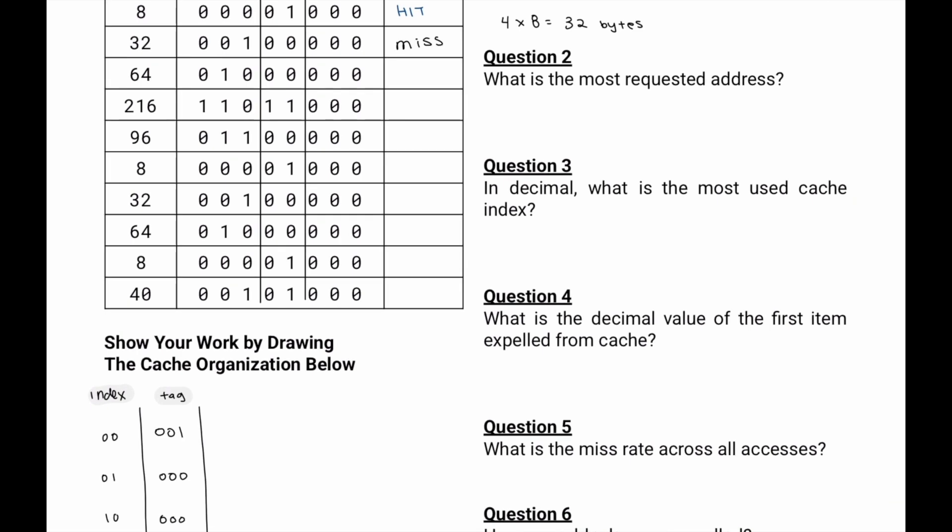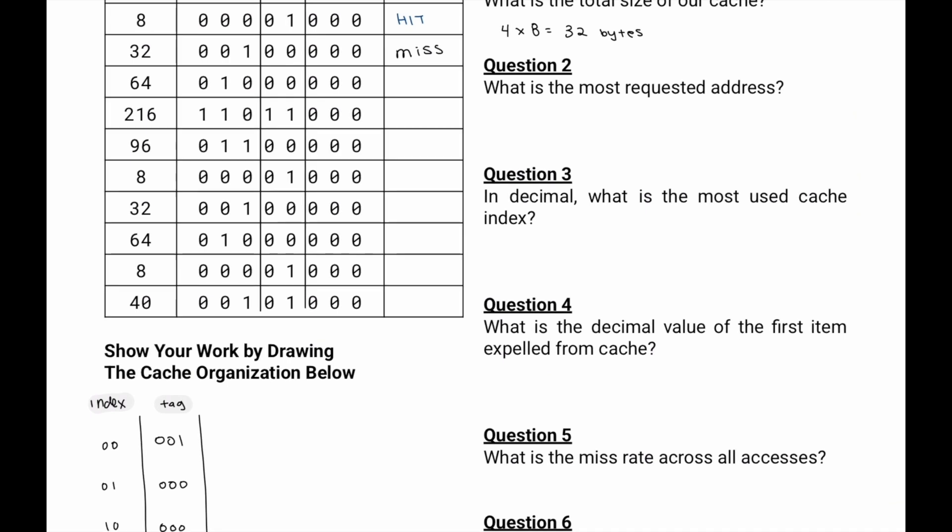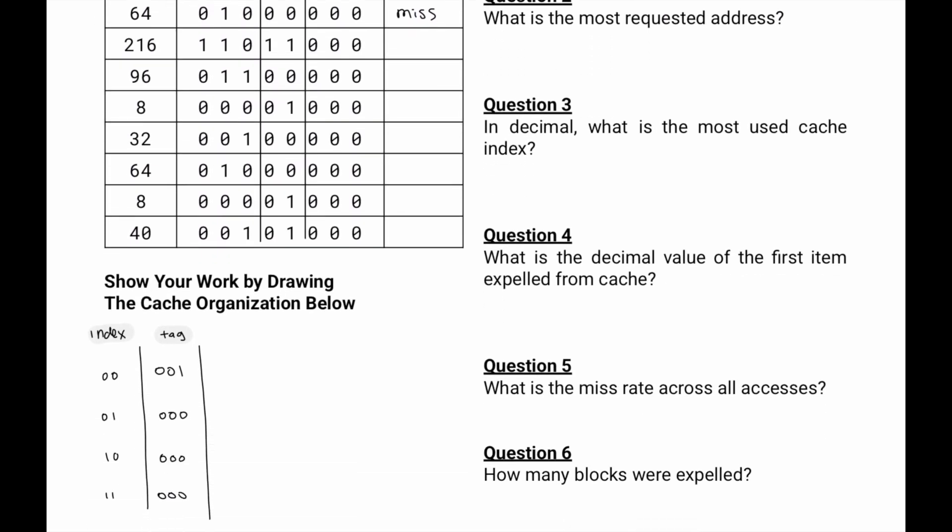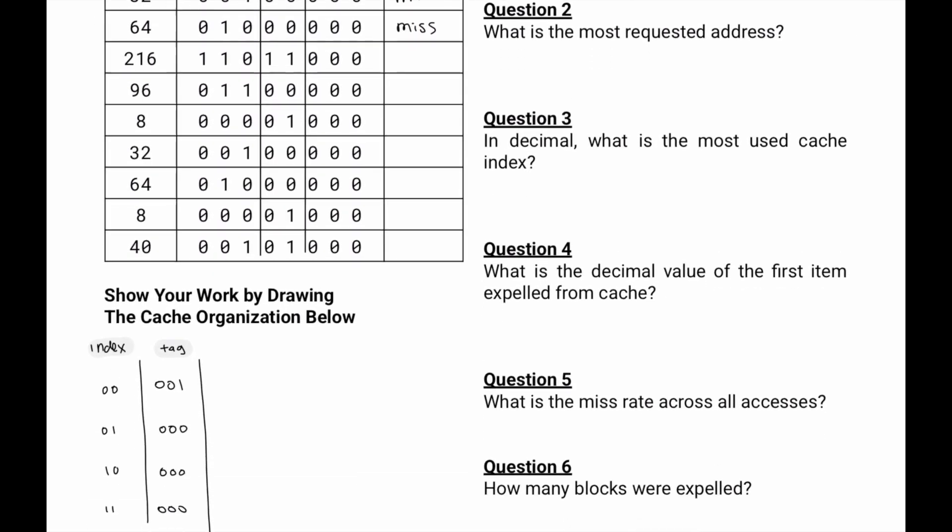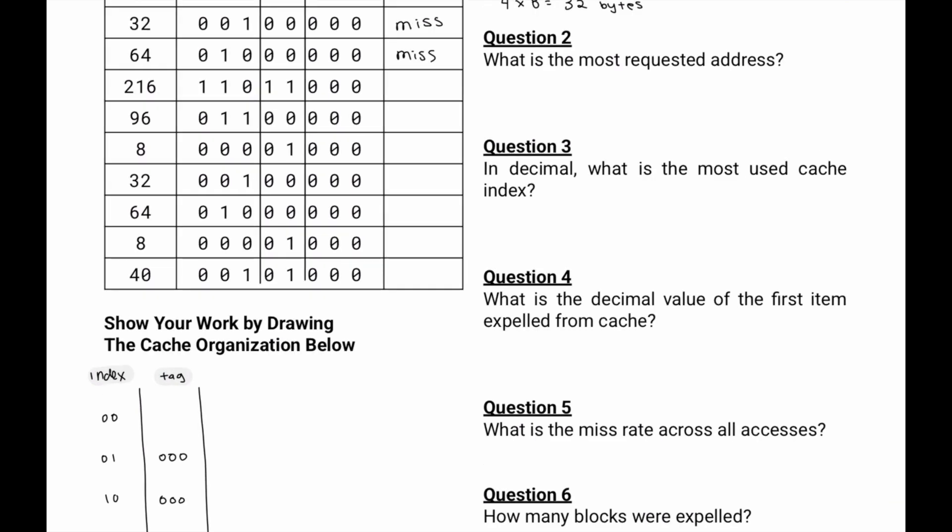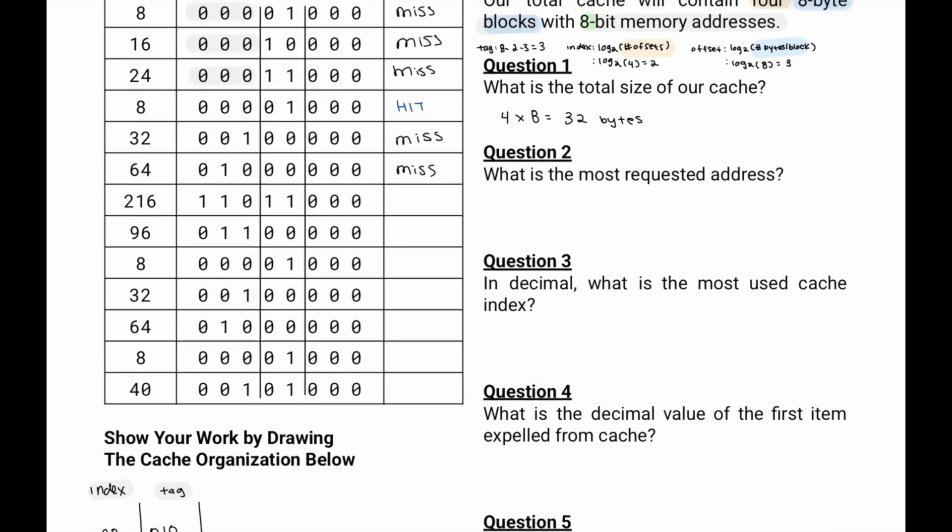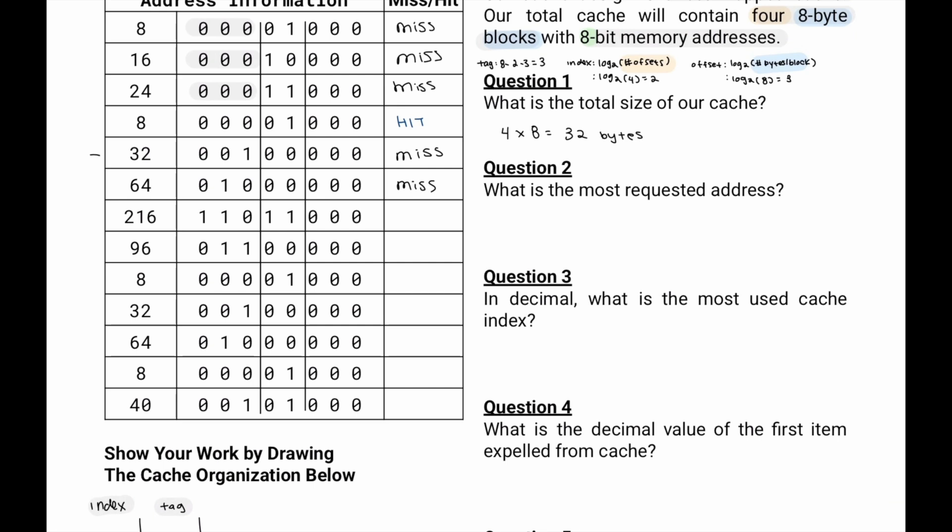Then we'll go to 64. We'll go to index 00. We'll check if the tag 010 is there. It's not. So that means it's going to be a miss. So then we'll place our new tag 010 there instead of our 001. So we can say that 32 over here is expelled at this point by 64.